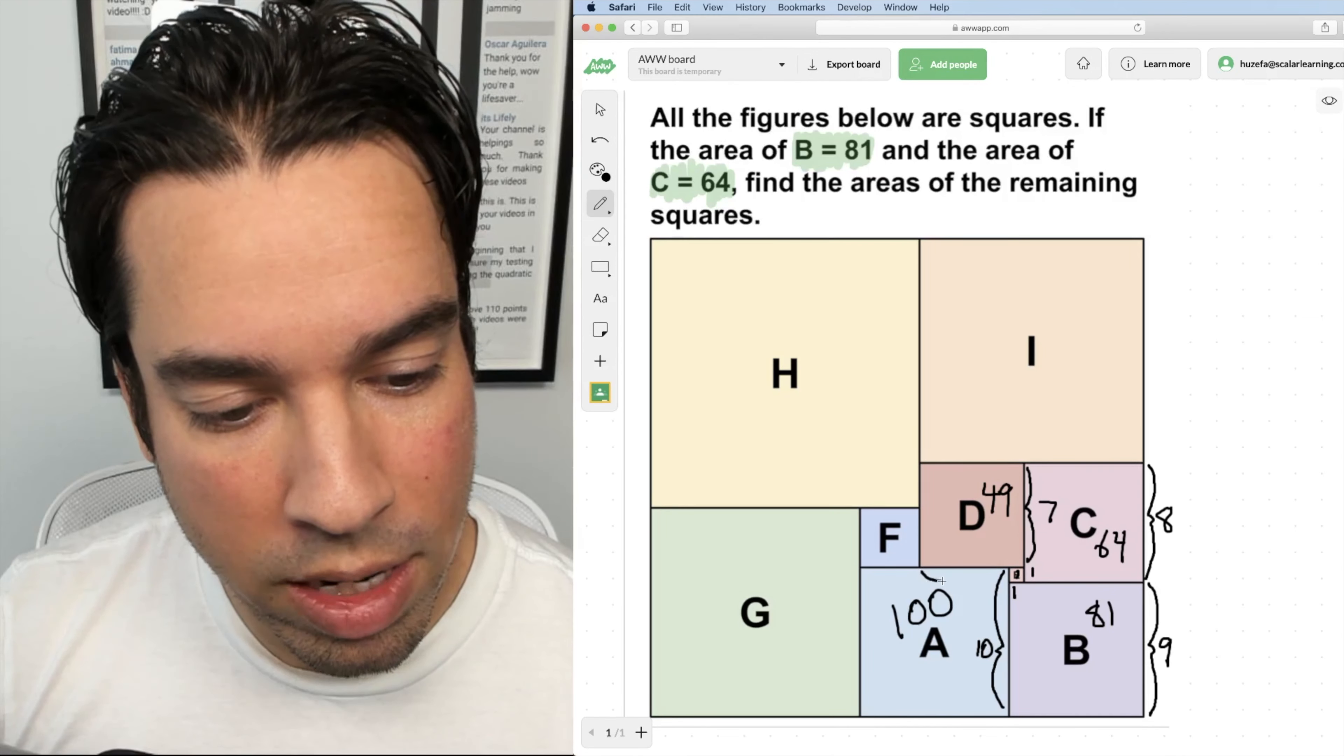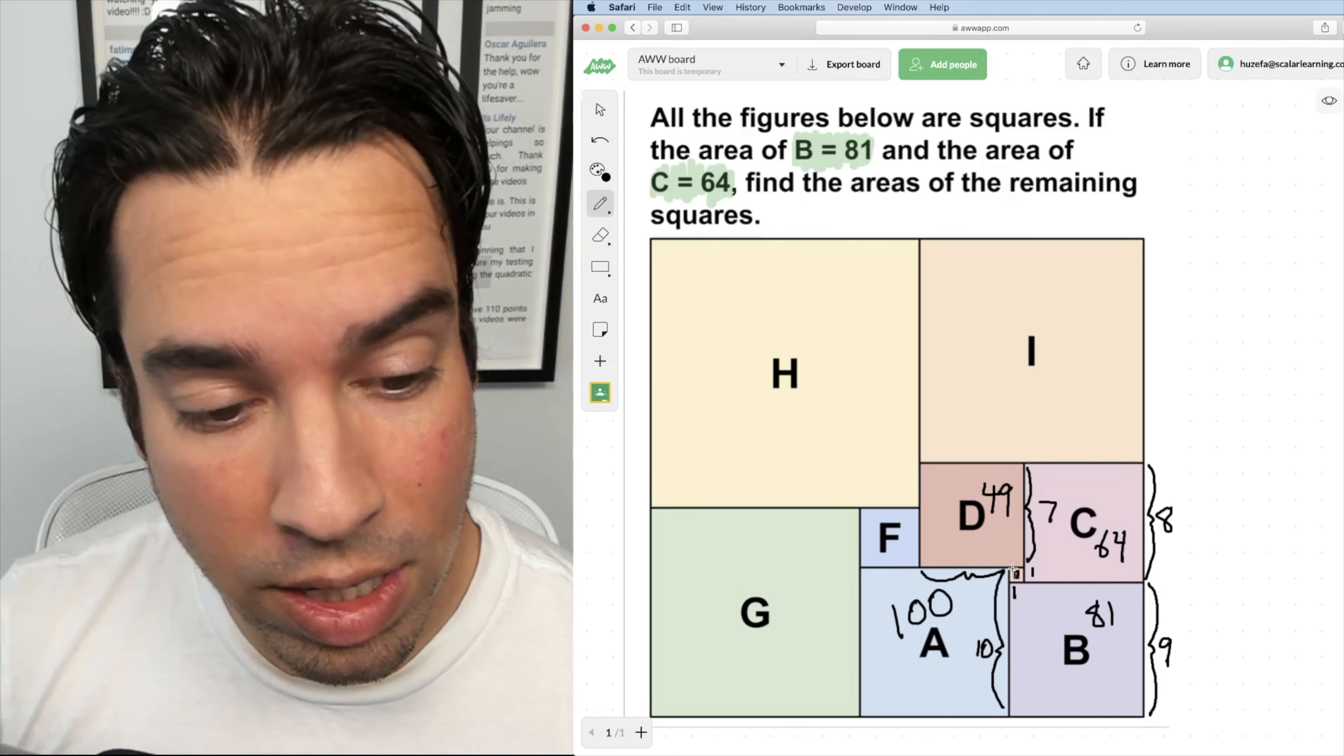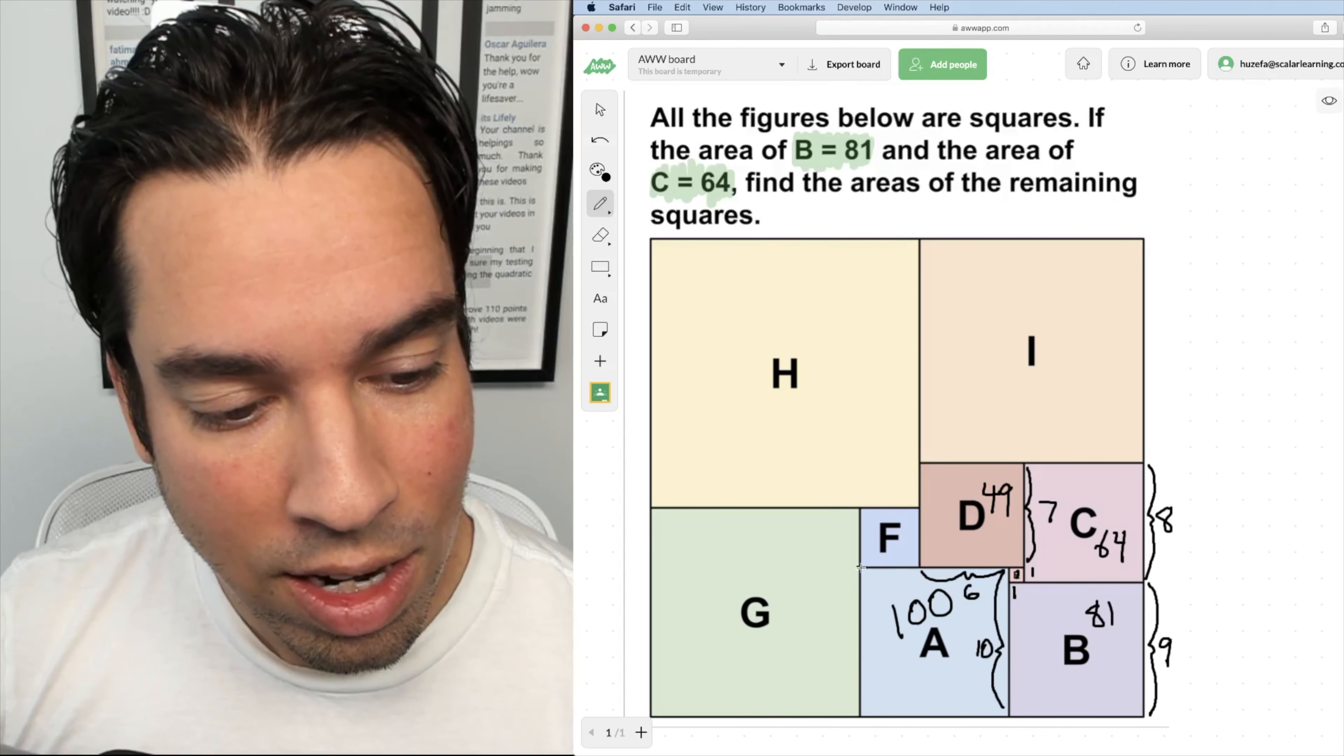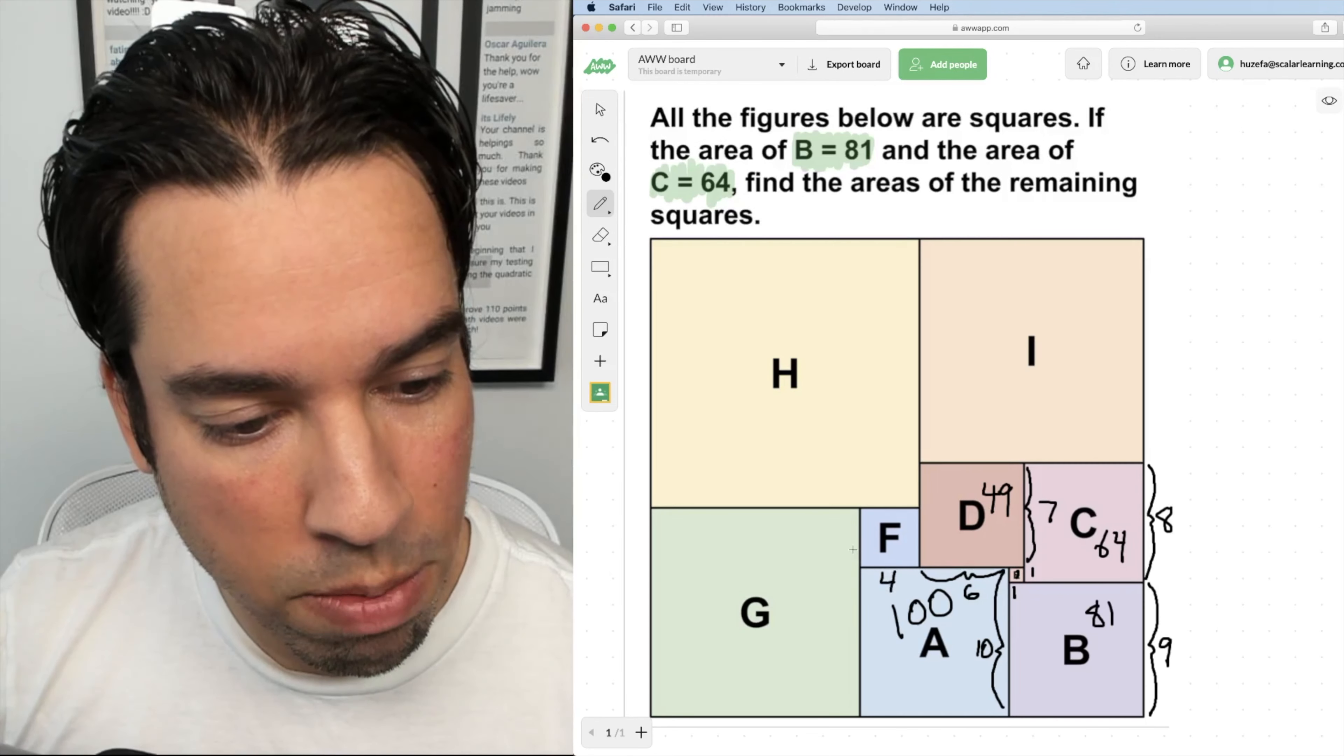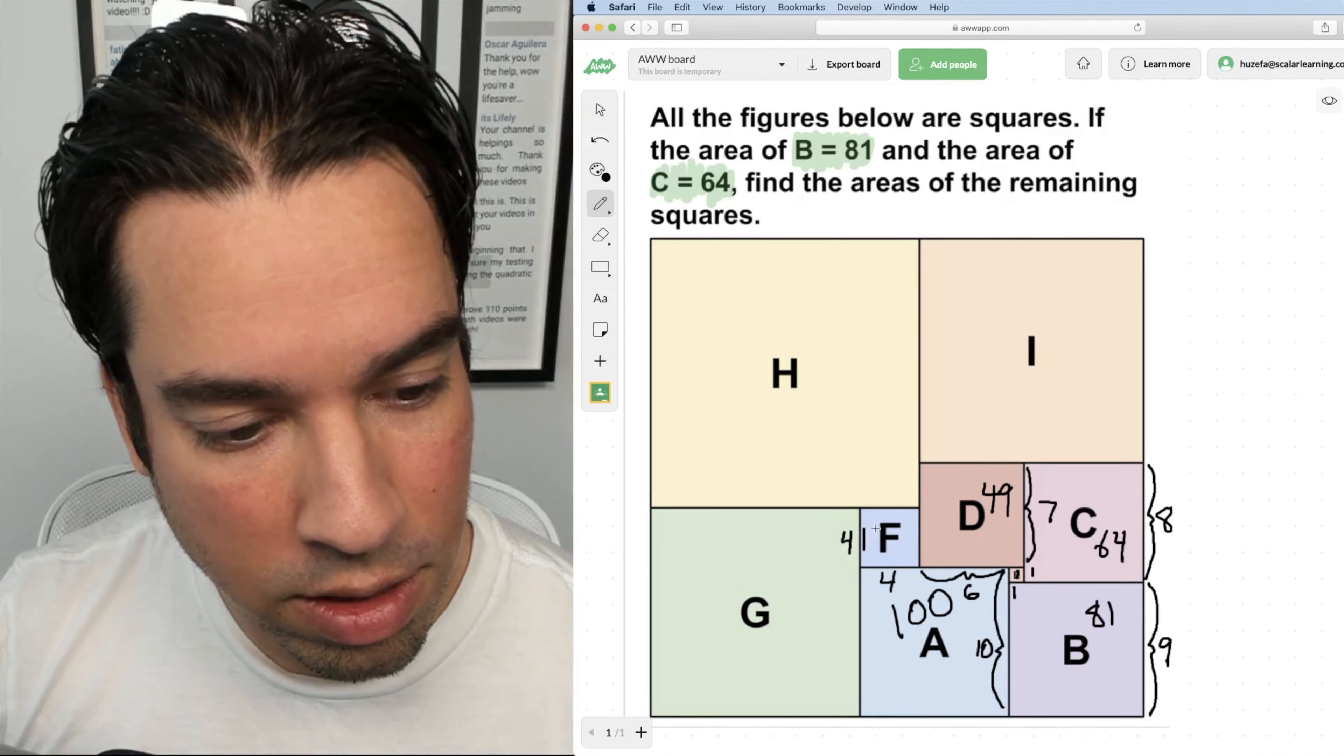Next, I know that this length right here is one less than seven because again, it has a difference of E from this side length of seven, making this little side length here six. If this side length is six and this whole length here is 10, I know that F must be a four by four, making it have an area of 16.